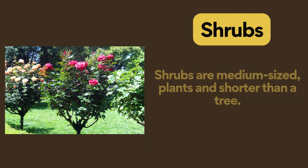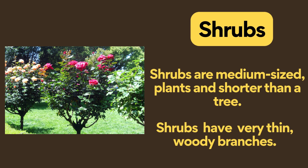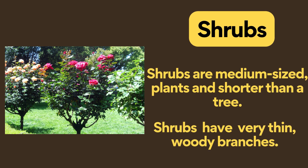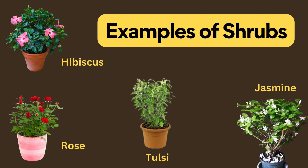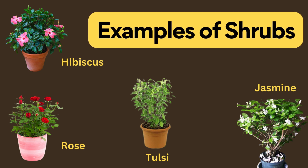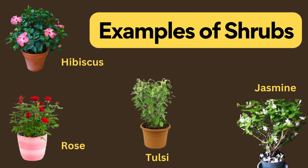Shrub. Shrubs are medium-sized plants and shorter than a tree. Shrubs have very thin woody branches. Examples of shrubs: hibiscus, tulsi, and jasmine.